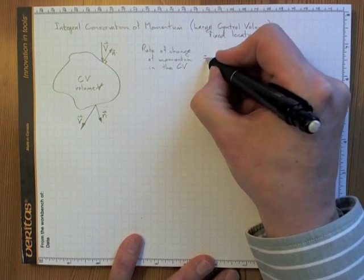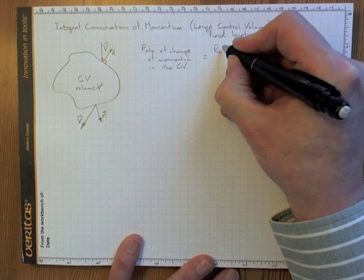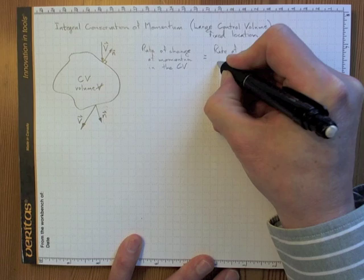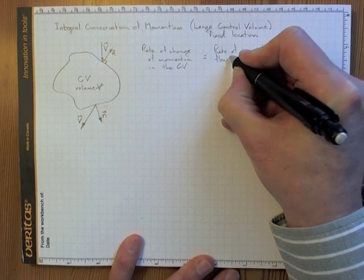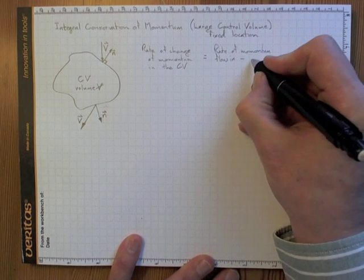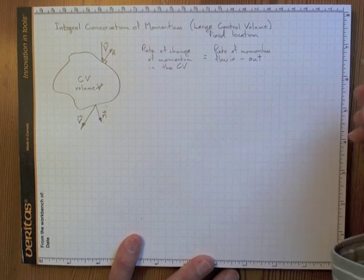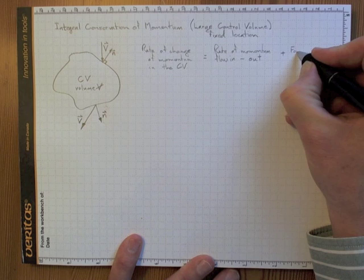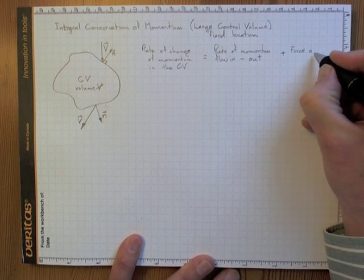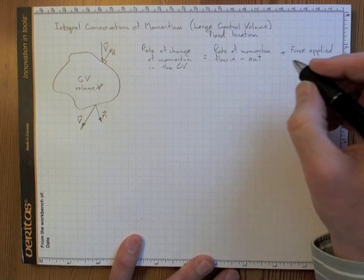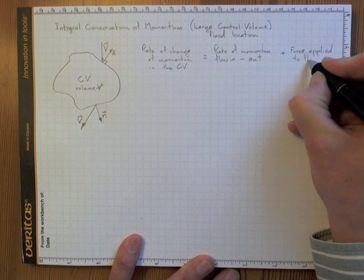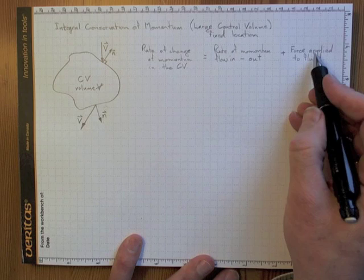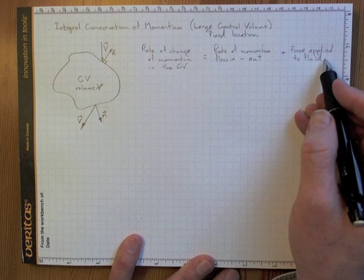The rate of change of momentum in the CV equals minus whatever the rate of momentum flow going out is, plus whatever force is applied to the fluid inside the control volume. By F = ma, the force applied equals the rate at which momentum increases for the mass the force is applied to.